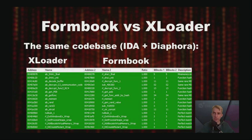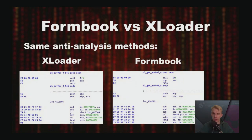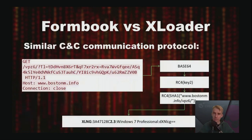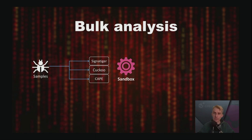XLoader shares Formbook's codebase and they have many similar functions, as visible in IDA and Diaphora. They also use the same protection methods. The most important pieces of malware data in both Formbook and XLoader are stored encrypted in special buffers designed to look like valid function code with a prolog and return instruction at the end. Each encrypted buffer is preceded by a small function used to access it. Some buffers contain data, while others contain decryption keys. The C2 communication protocol also appeared very similar, but slightly changed in XLoader, which implements an additional encryption layer using a key stored in the malware configuration that is unique for each campaign. Therefore, it's impossible to decrypt XLoader network traffic without analyzing the sample.